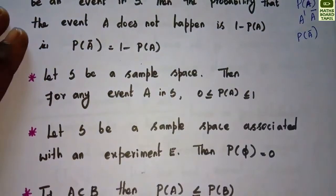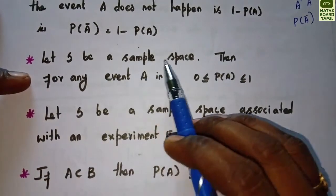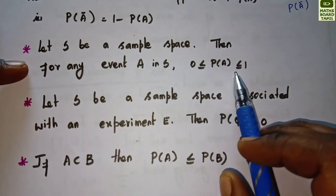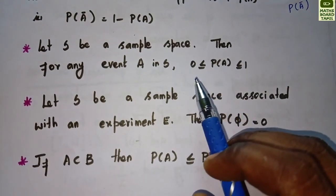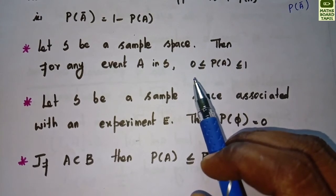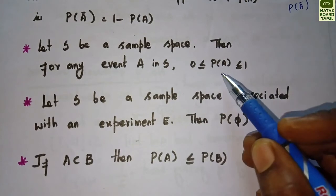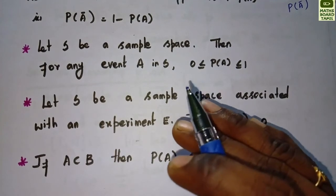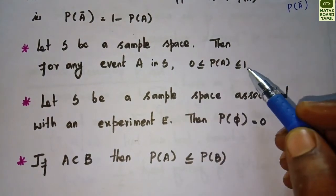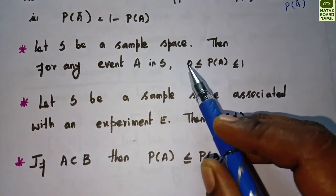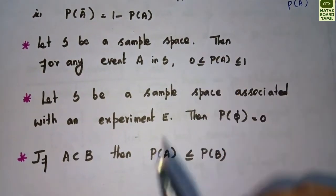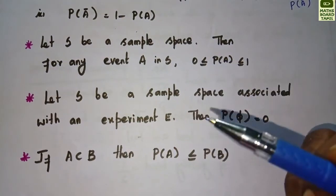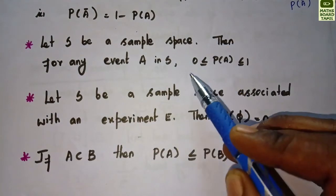Let S be a sample space. For any event A in S, the probability satisfies: 0 ≤ P(A) ≤ 1. So probability ranges from 0 to 1. A probability of 0 means the event will not occur, and a probability of 1 means the event is certain.